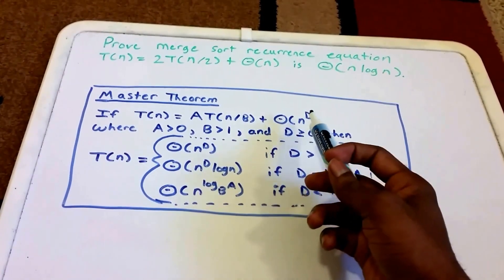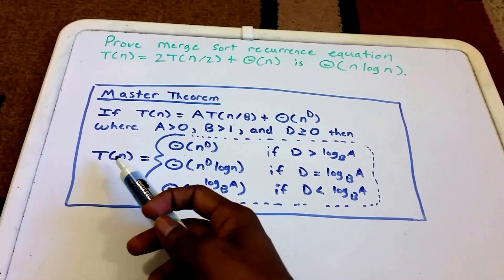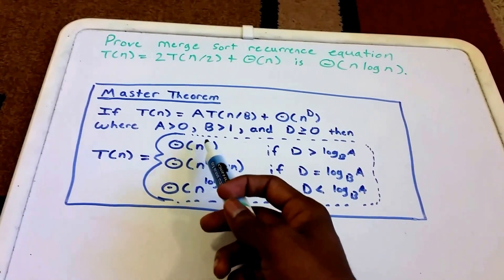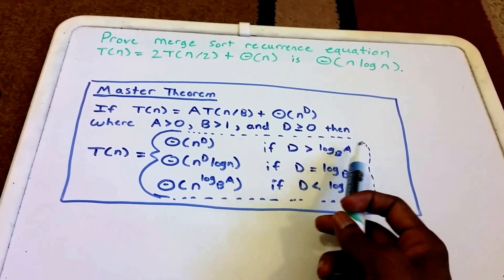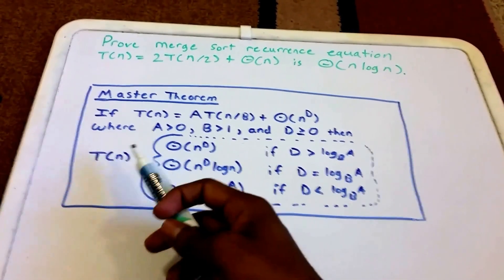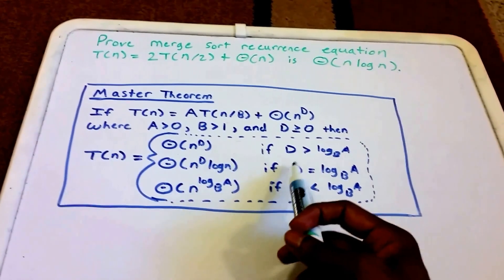T(n) = Θ(n^D) if D > log_B(A). T(n) = Θ(n^D log n) if D = log_B(A).